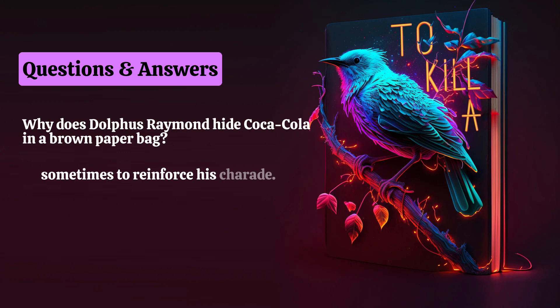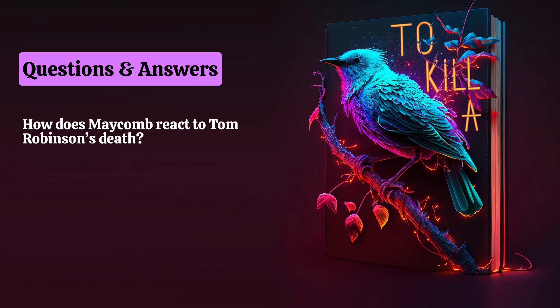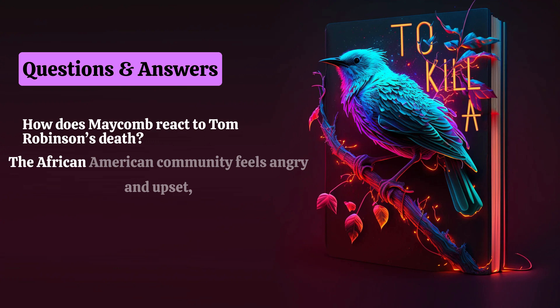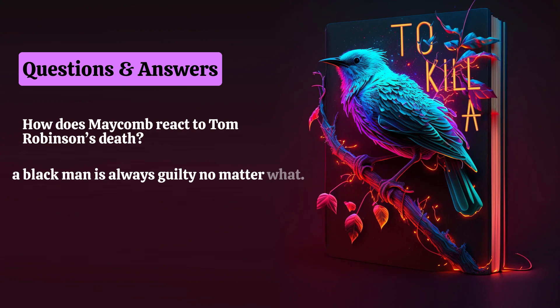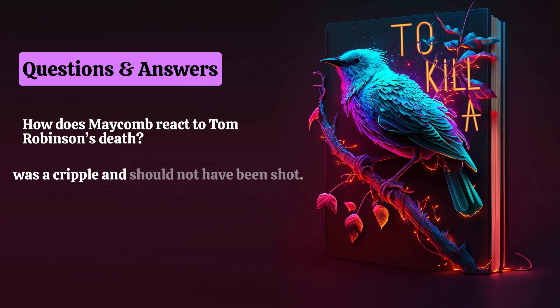How does Maycomb react to Tom Robinson's death? The citizens of Maycomb react to Tom's death in many different ways. The African American community feels angry and upset, but they cannot show it in public. Many racist white people feel that justice was done because a black man is always guilty, no matter what. Some white people are shamed and sincerely saddened by the injustice done by the jury. The editor of the local newspaper feels angry because Tom was a cripple and should not have been shot. Bob Ewell is satisfied because his lie worked, and Jem is furious and incredulous.